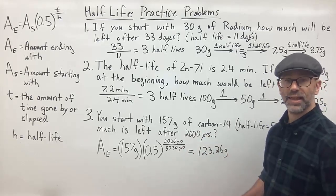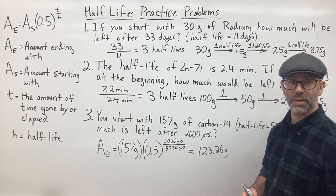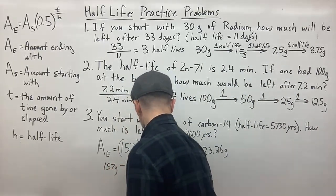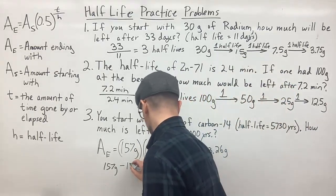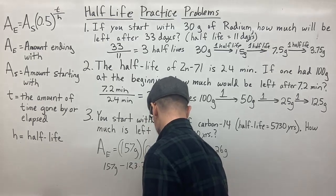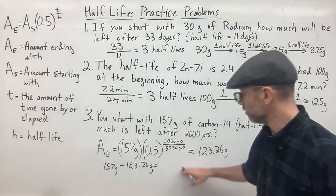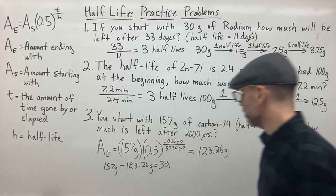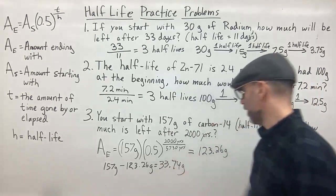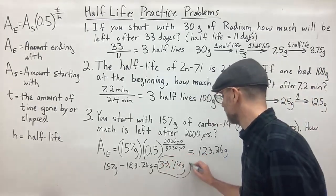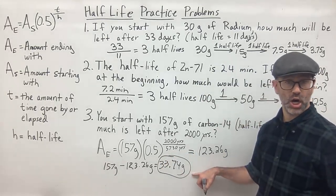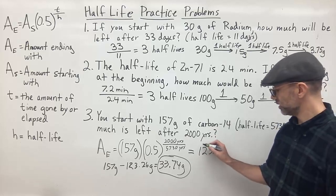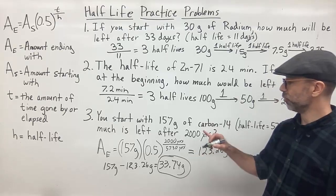The amount that has decayed can be found by subtracting: 157 − 123.26 = 33.74 grams. So 33.74 grams of carbon-14 has decayed and become something more stable, and 123.26 grams is the radioactive carbon-14 left after 2,000 years.